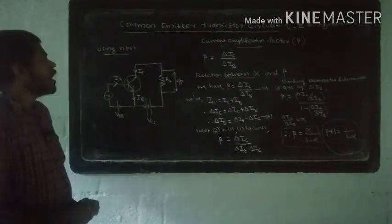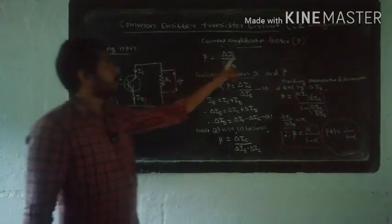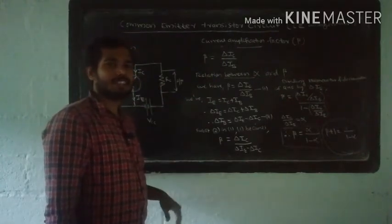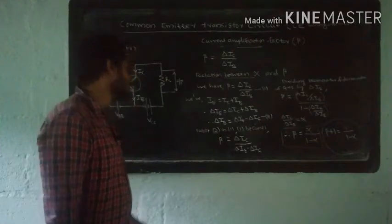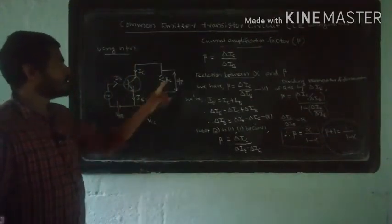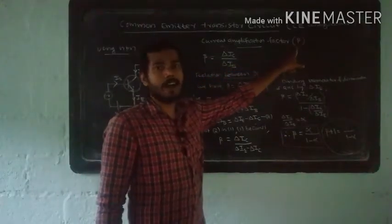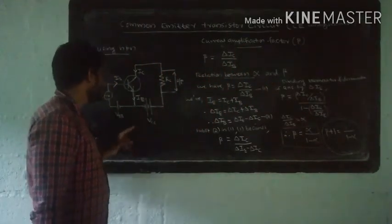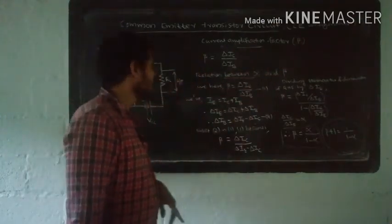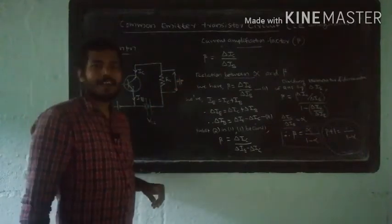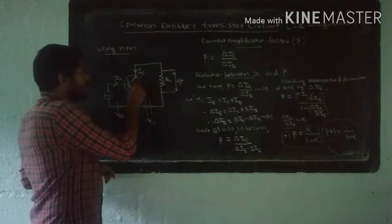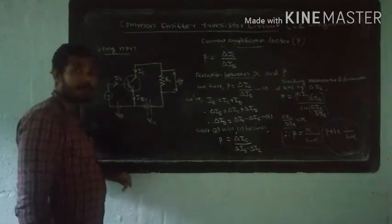The current amplification factor of the Common Base transistor circuit is denoted by alpha. The current amplification factor of the Common Emitter transistor circuit is denoted by beta. Beta is the ratio of change in output current to the change in input current.